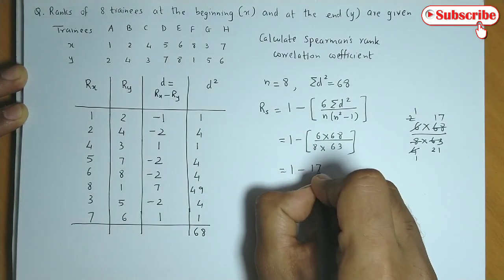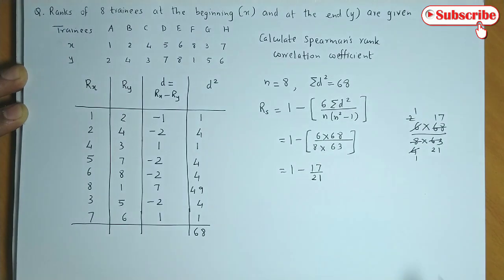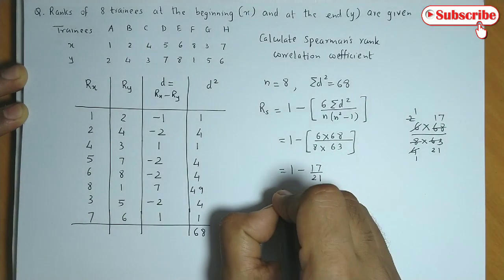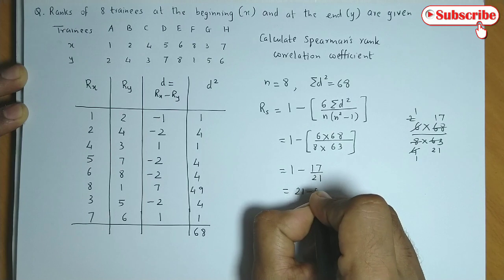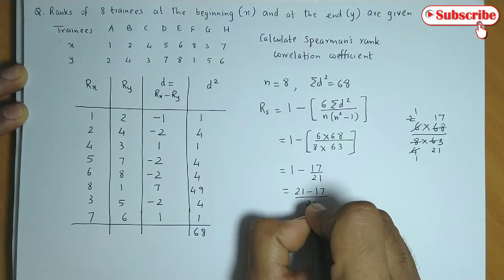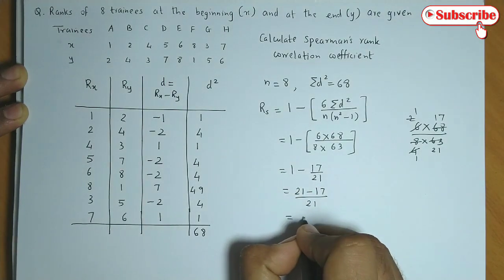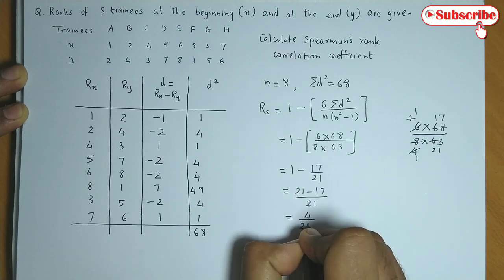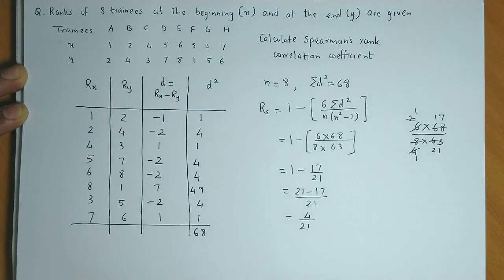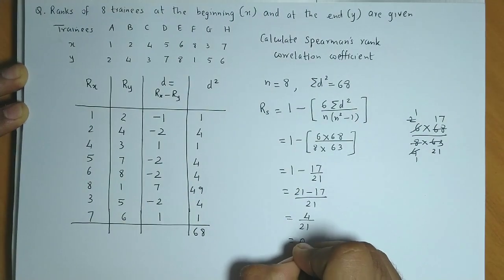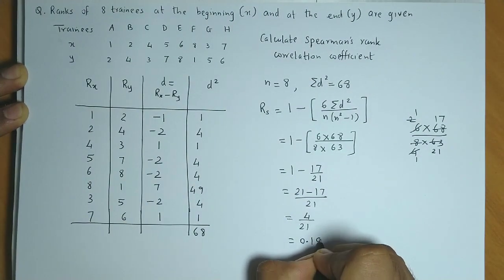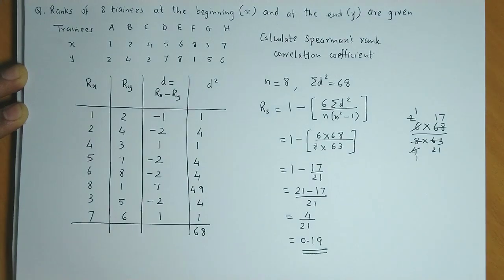So 1 minus 17 upon 21. If we equalize the denominator, we have 21 minus 17 upon 21, which is 4 by 21. So if we divide this, 4 divided by 21 gives 0.19. So the value for rs is 0.19.